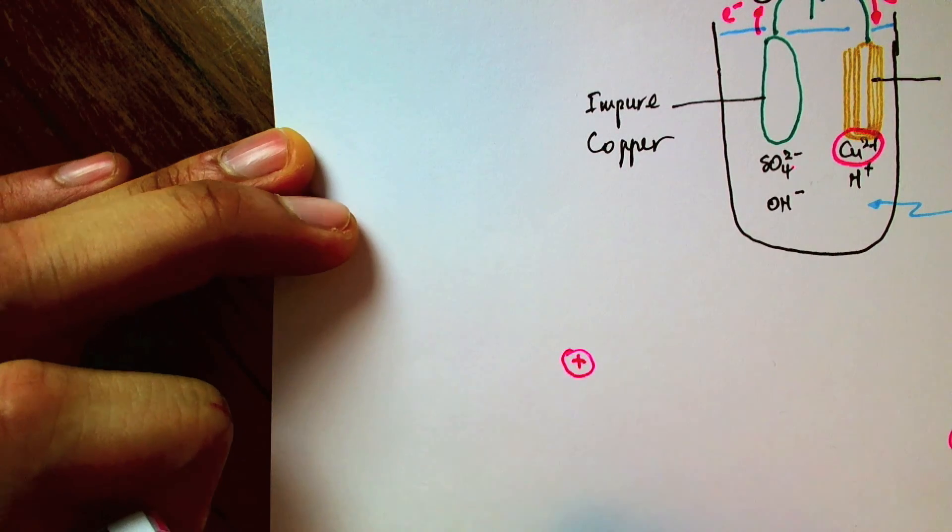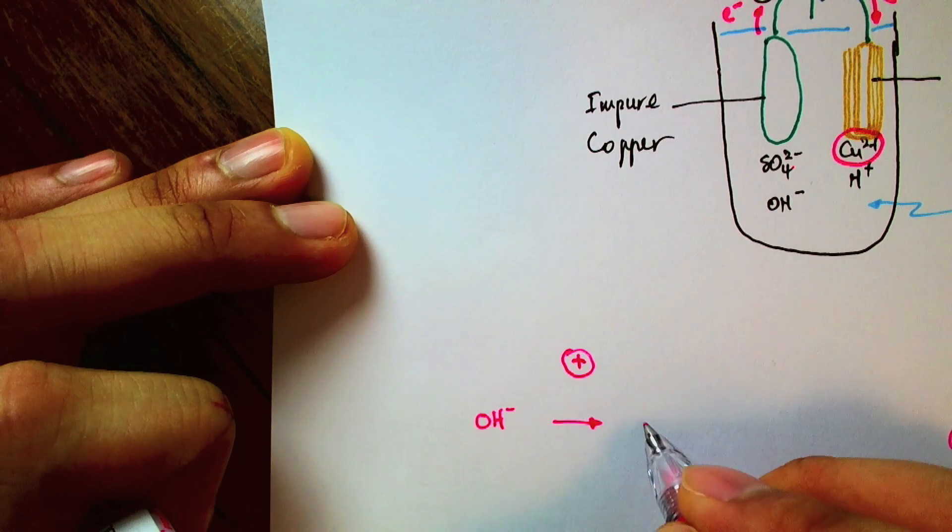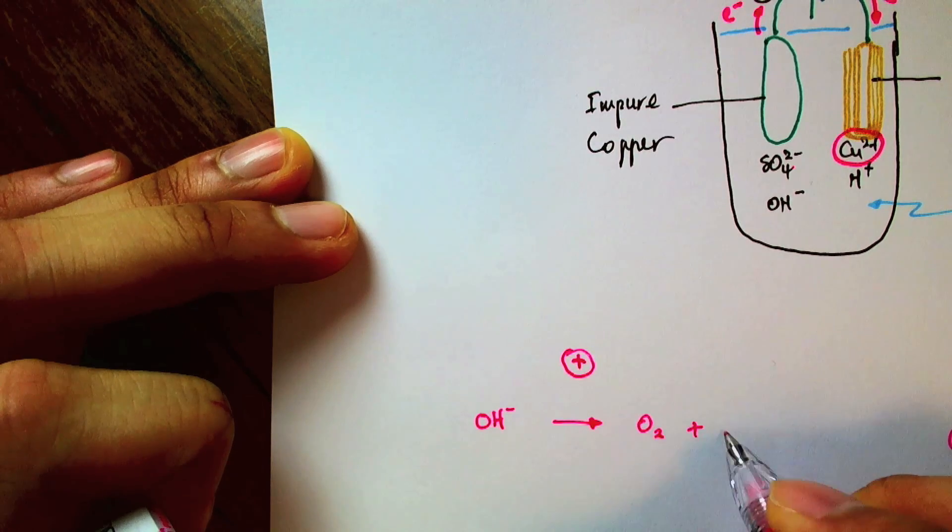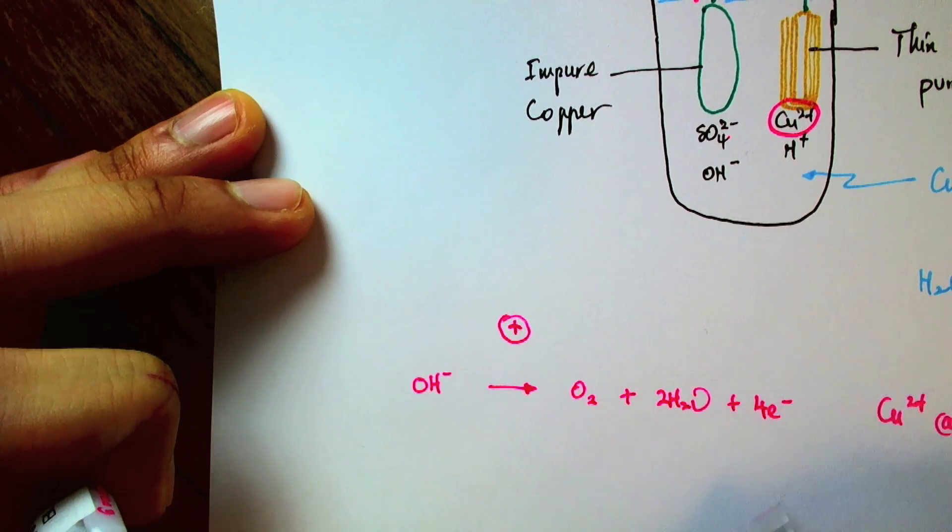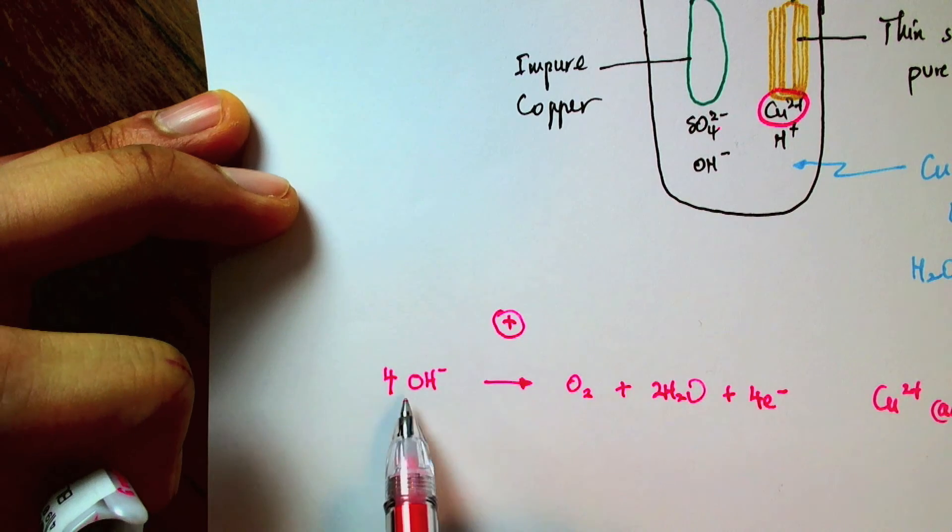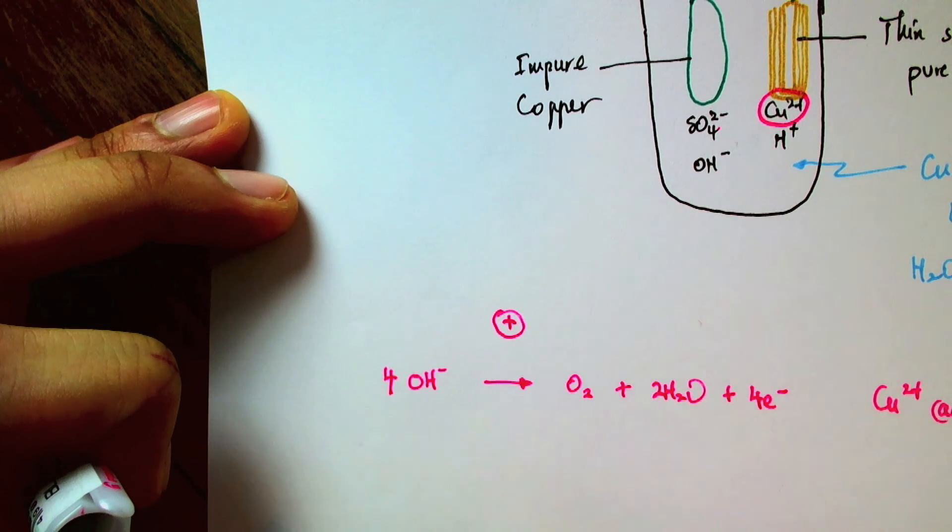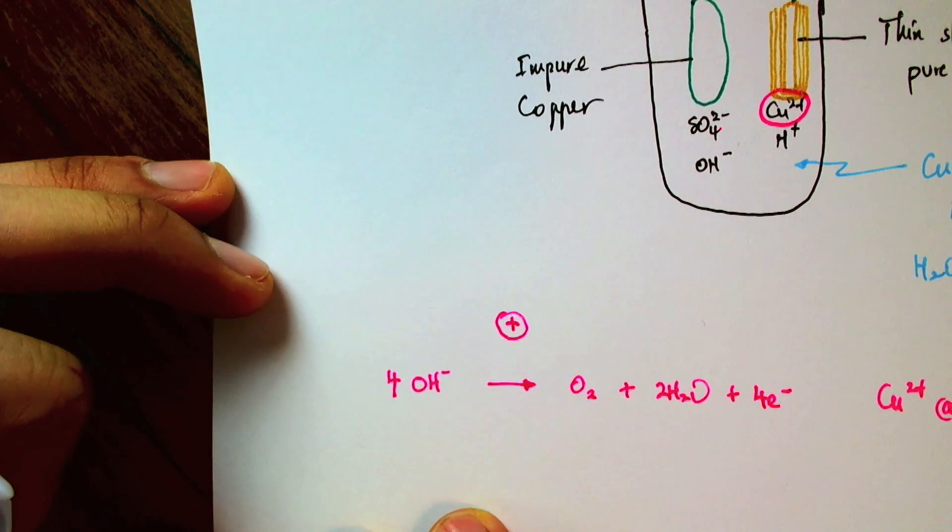So I'm now at the anode. Hydroxide ions gives up electrons to form water. So four hydroxide ions will give up four electrons to form an oxygen and two water. That is one possibility.